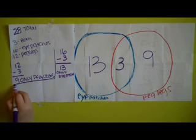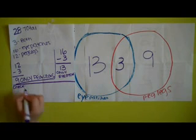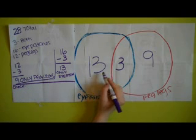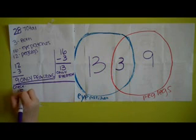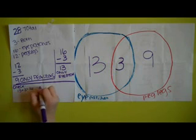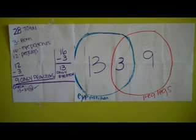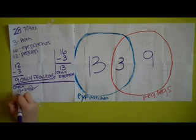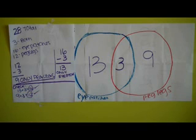To check your work, you should make sure that in your blue circle you have the total amount of eye patches, which is 13 plus 3, which equals 16 — which is indeed our total amount of eye patches. So that's a check. And to check the amount of peg legs, you should add 9 plus 3 in the red circle, which should give you 12, which is our total amount of peg legs. And you have just done a Venn diagram.